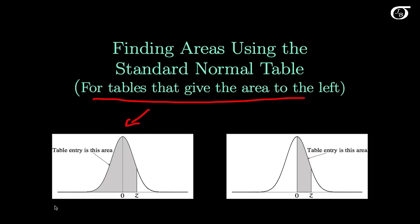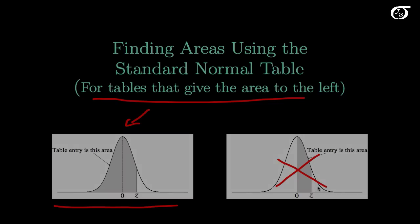In other words, things that look like this. Another common one is a table that gives the area between 0 and the Z value you look up, but I look at that in another video and won't be looking at that here.